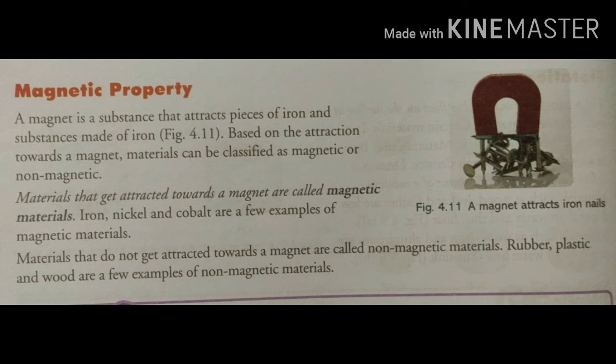Next is magnetic property. A magnet is a substance that attracts iron pieces. Materials that get attracted towards a magnet are called magnetic materials, and materials which do not get attracted towards a magnet are called non-magnetic materials. Materials can be classified on this basis.